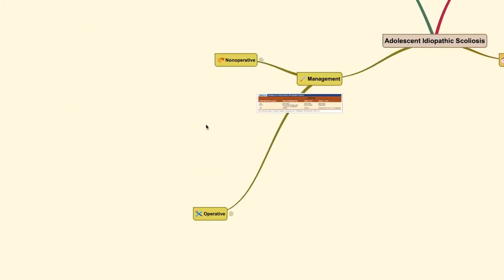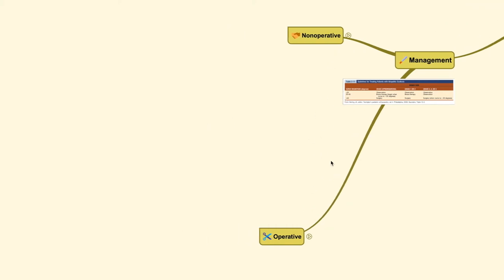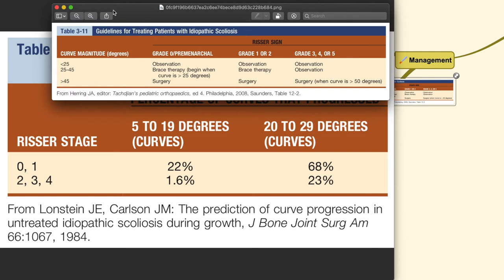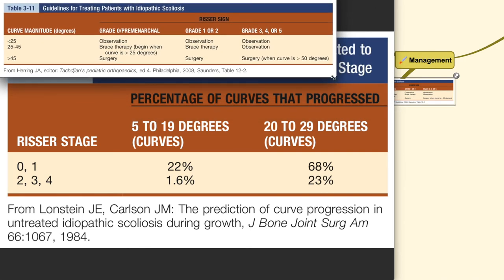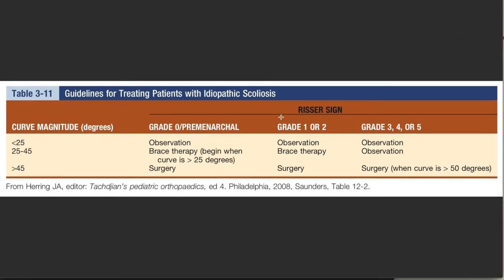This table provides a very good summary of treatment options based on Risser sign stage and curve magnitude. When the curve magnitude is less than 25 degrees in an idiopathic scoliosis diagnosis, observation only is recommended regardless of Risser stage. If the curve exceeds 45 degrees, surgical treatment is indicated regardless of Risser stage.